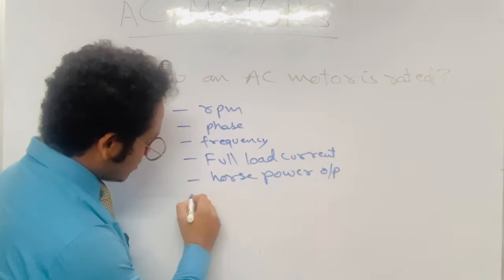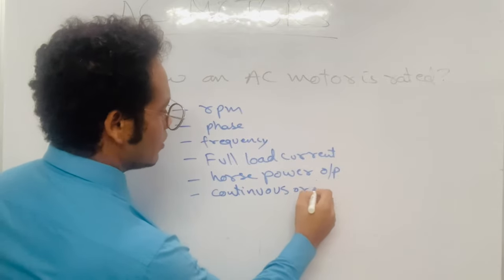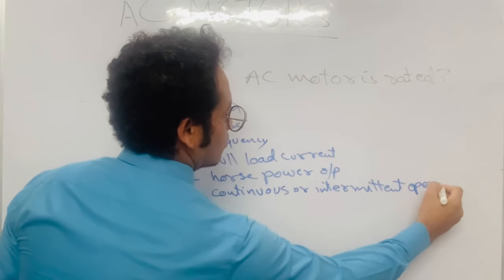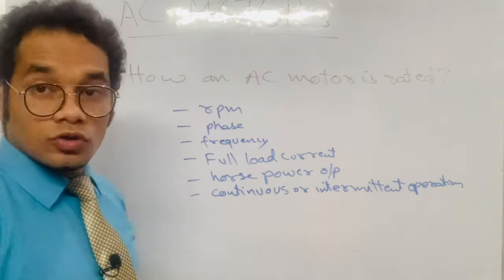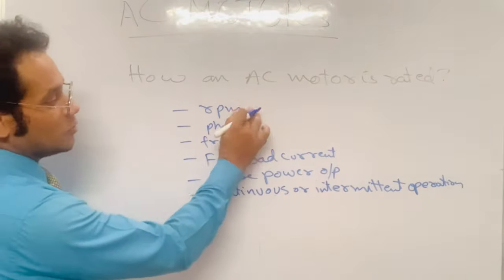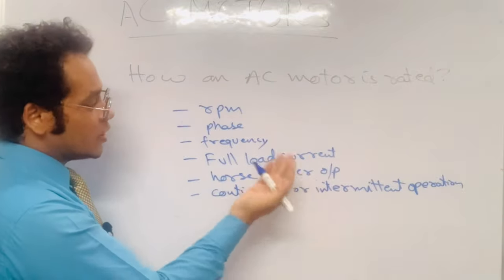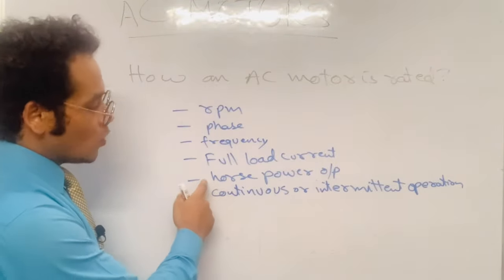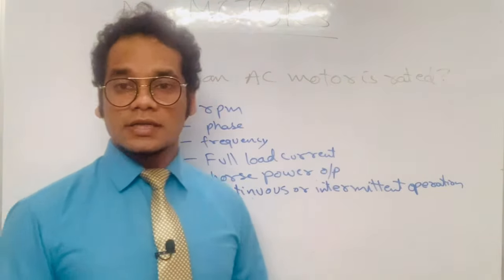Additional rating parameters include horsepower output — that is, how much horsepower is in the mechanical energy output of the motor — and whether it is designed for continuous or intermittent operation. So the parameters for rating an AC motor are: RPM, number of phases, frequency, full load current, horsepower output, and continuous or intermittent operation.